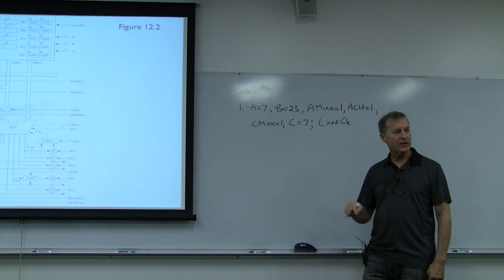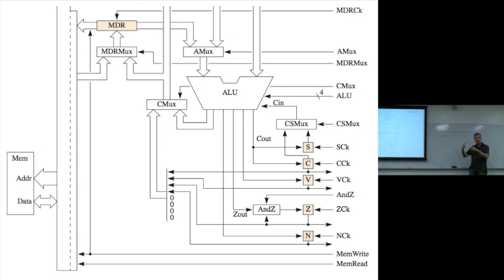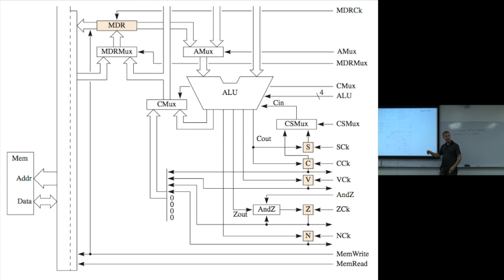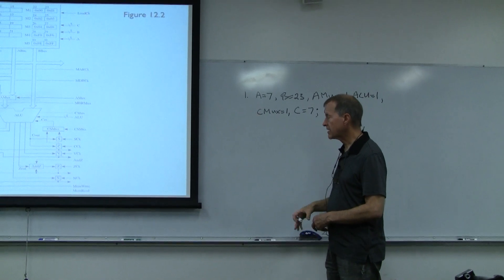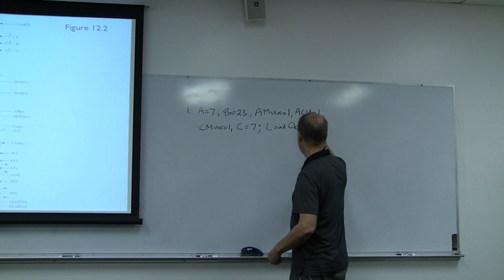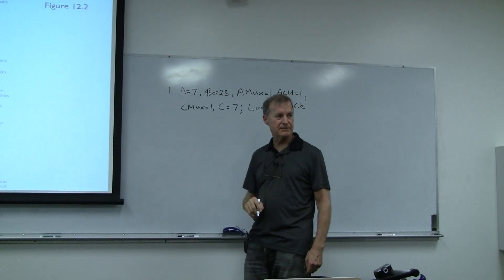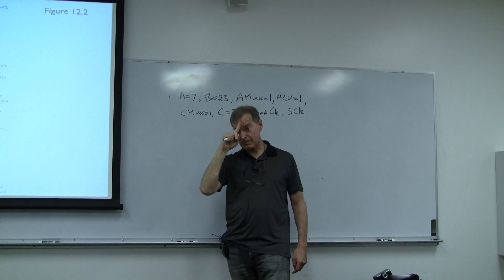The carry out from the ALU — the C out — is presented to both the shadow carry S and the regular carry C bit, but we only want to clock it into the shadow carry. So we add comma SCK — the shadow carry clock. That saves the carry from the low byte addition for use in the high byte addition.